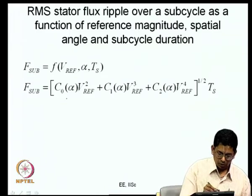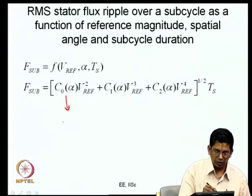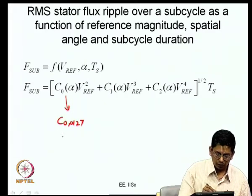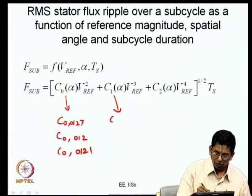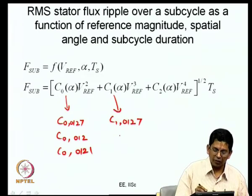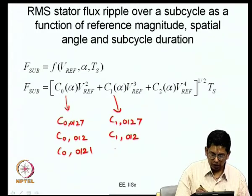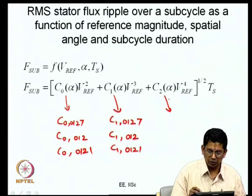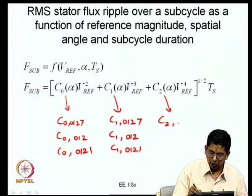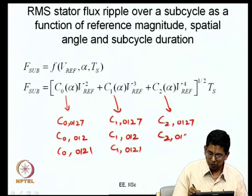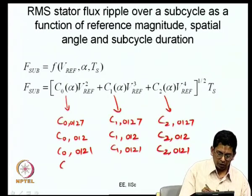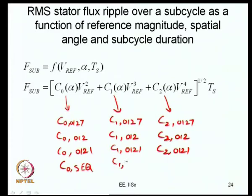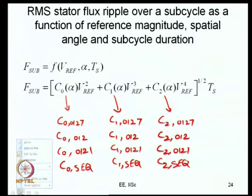Another clamping sequence uses zero state 7 (plus-plus-plus) for the entire duration T_z, so the sequence is 7→2→1. In sequence 012 the B-phase is always clamped to the negative DC bus. In sequence 721 the R-phase is clamped to the positive DC bus. These are called clamping sequences. There are also double switching clamping sequences used in advanced bus clamping PWM. Sequence 0121 applies zero state 0 for T_z, then vector 1 for T1/2, then vector 2 for T2, then vector 1 again for T1/2. The reverse sub-cycle is 1→2→1→0.